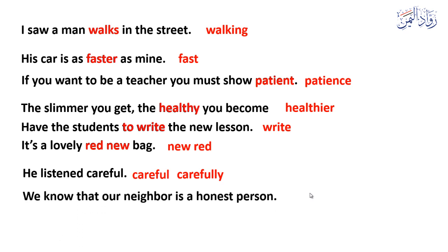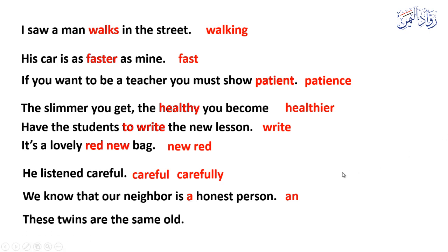'We know that our neighbor is a honest person.' The mistake is in the article 'a' — it should be 'an'. The correct sentence is: 'We know that our neighbor is an honest person.' Because the 'h' in 'honest' is silent. Similarly you can say 'an hour'.